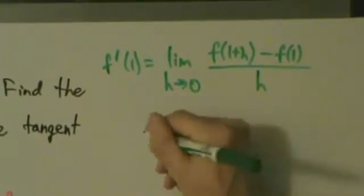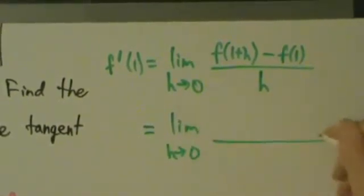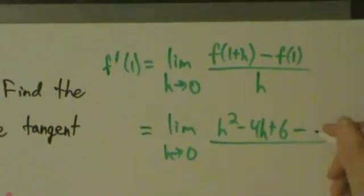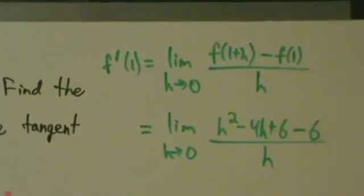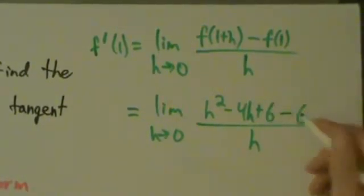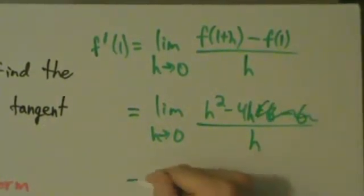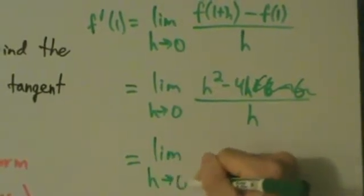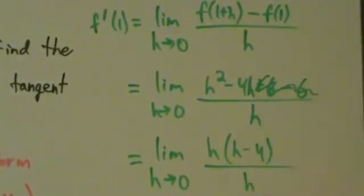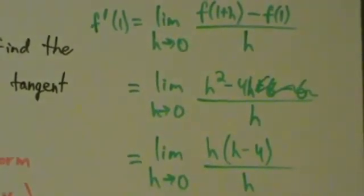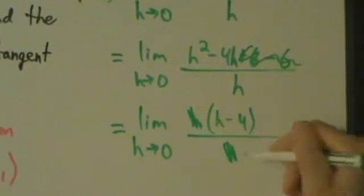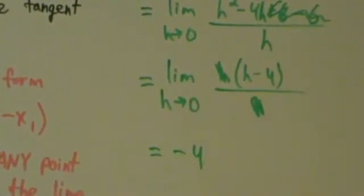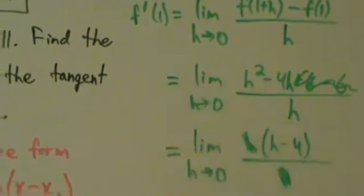Substituting into the difference quotient, we have the limit as h goes to 0 of h squared minus 4h plus 6, minus f of 1 which is 6, all divided by h. The plus 6 and minus 6 cancel, leaving the limit as h goes to 0 of h squared minus 4h over h. Factoring out h from the numerator gives h times h minus 4, over h. The h's cancel, leaving the limit as h goes to 0 of h minus 4, which by direct substitution equals negative 4. So f prime of 1 equals negative 4.